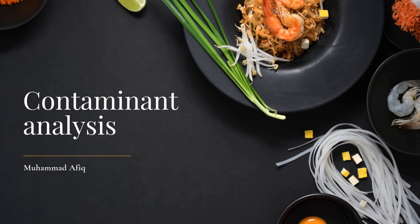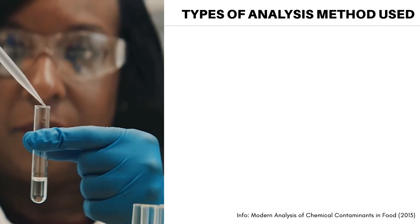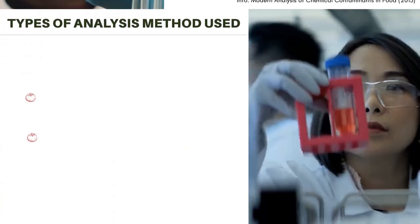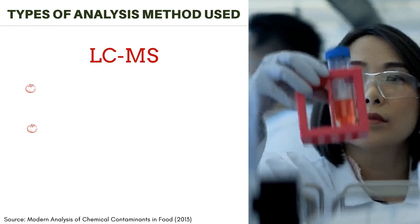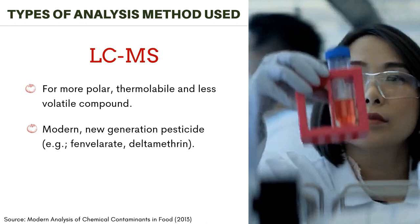Moving to the analysis of contaminants, there are two types of analysis methods. First, gas chromatography-mass spectrometry, or GCMS, which is suitable for volatile and semi-volatile compounds found in contaminants. It separates components with similar boiling points and detects peaks and retention times. Another method is liquid chromatography-mass spectrometry, or LCMS, which is suitable for more polar, thermolabile, and less volatile compounds. Modern and new-generation pesticides such as fenvalerate and deltamethrin are also analyzed using LCMS.